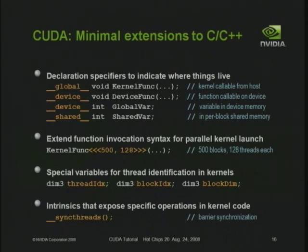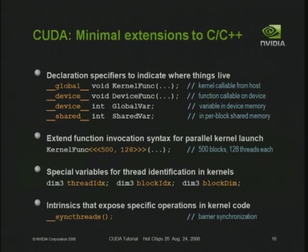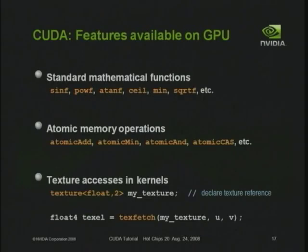Here is the index of essentially all the extensions CUDA makes to C. The top set are the various declaration specs to specify where things live: global variables in host memory, global variables in device memory, device functions that execute in parallel, or globally callable kernel entry points. There's the extended function call syntax with triple chevrons to launch parallel kernels. There are special variables for indexing threads and intrinsics like syncthreads for barrier synchronization. There are also function libraries including mathematical functions, atomic memory operations, and texture access and filtering.